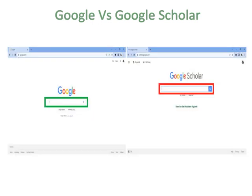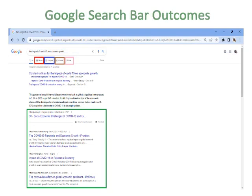Looking at the difference in home pages: the Google search bar is bordered with green color, while the Google Scholar search bar is bordered with red color. In the search bar, you can write anything you want to search — articles, journals, books, theses, or dissertations — and press Enter to get results.